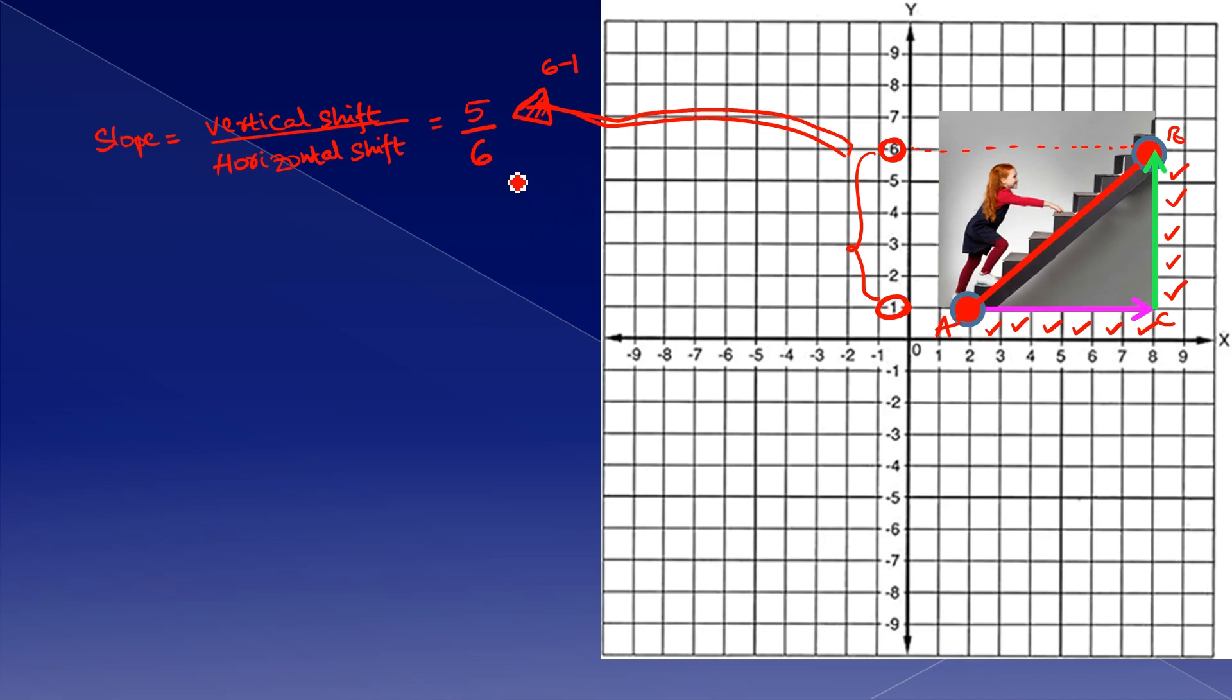In the same way, look at number 6 in the denominator. Is there any relation between 2, which is the starting point, and 8, which is the ending point? Here also you can see that the difference of 8 and 2 is giving the denominator.